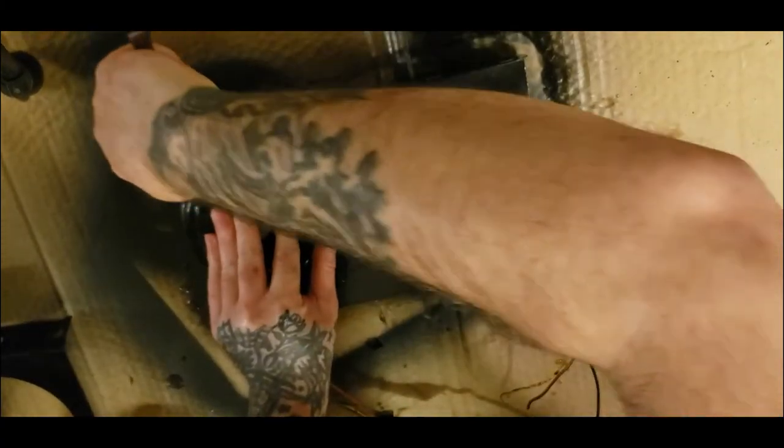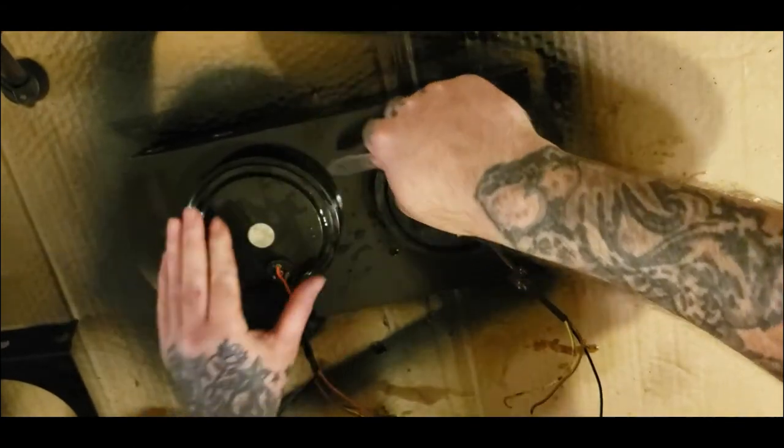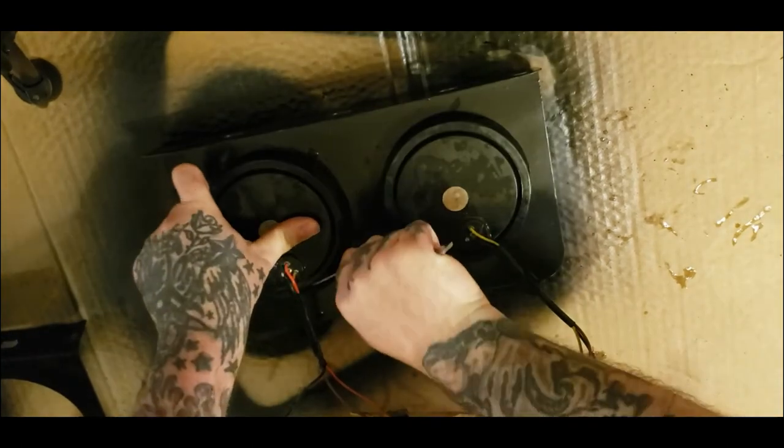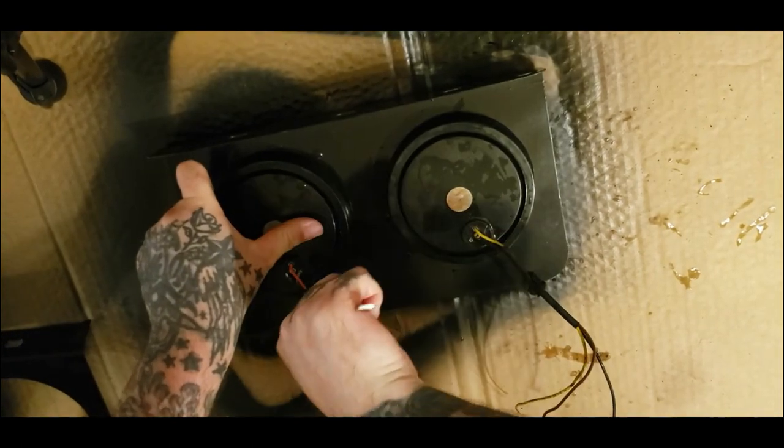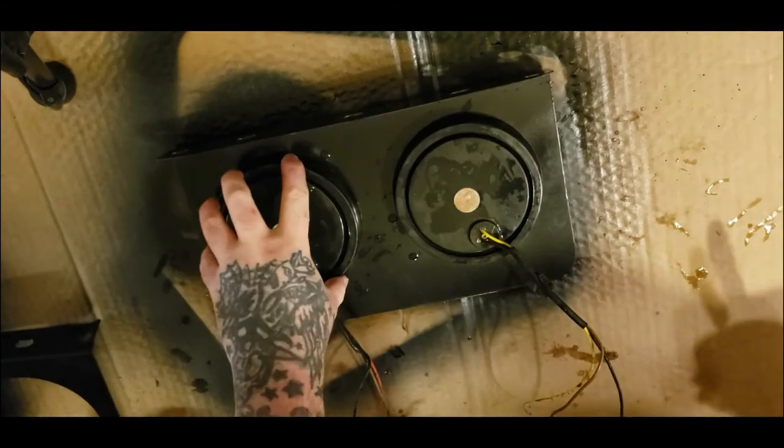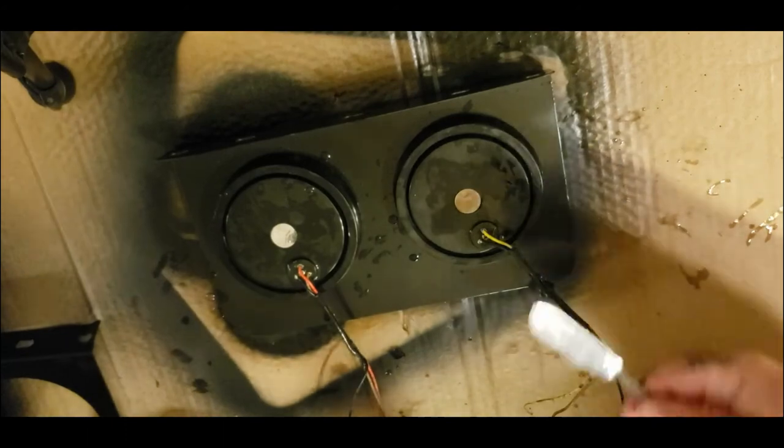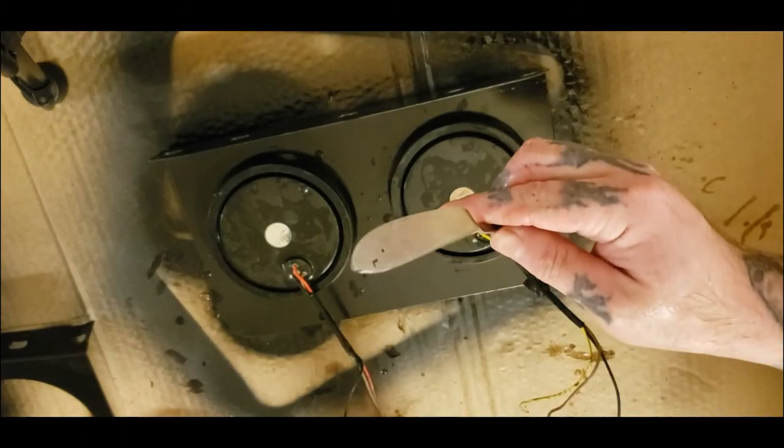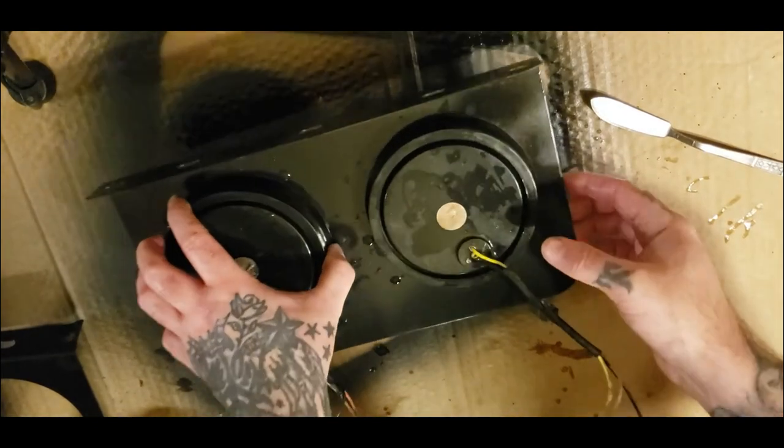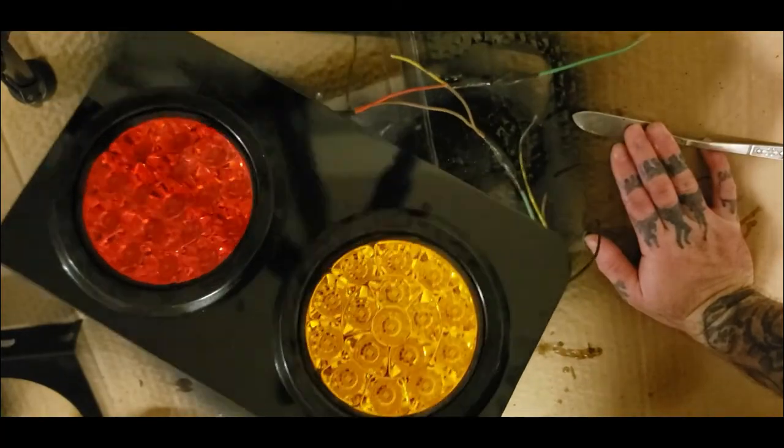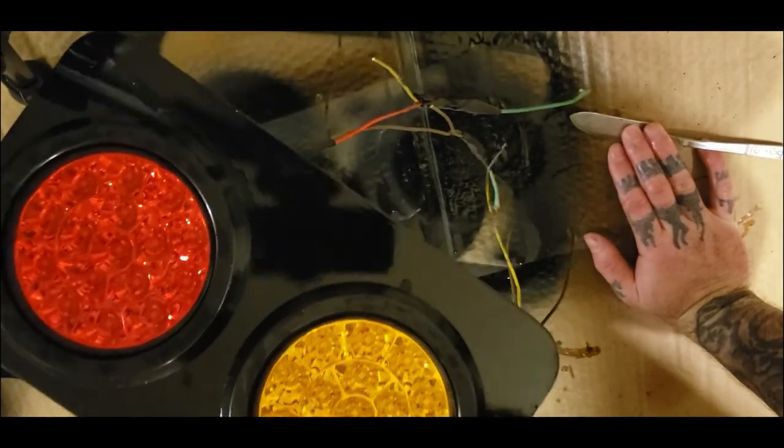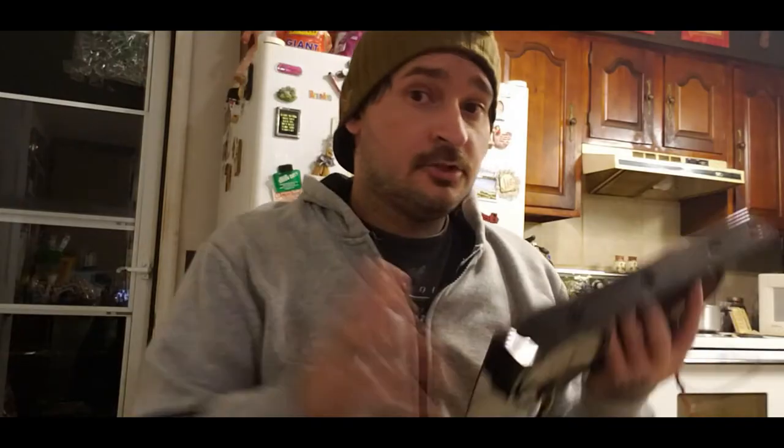Just like so. Now we're going to work around the edge just like we did before on the other one. A pick tool would do awesome on this, but it just depends what you got. A butter knife will work, you just have to be careful. This is just a butter knife, it's not sharp so it won't cut anything. So let's look at it. It looks extremely good, a lot better than what we started with. And I'm going to do the other side now and I'll show you guys what they look like all done.